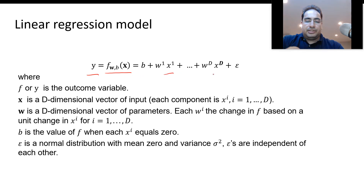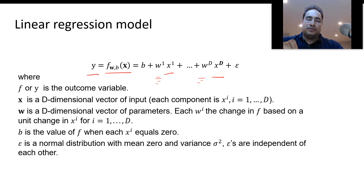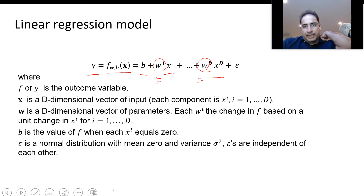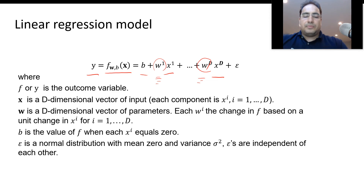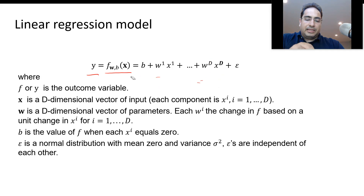The output is calculated by multiplying each input feature by a weight provided in your model. When we train this model, we are trying to find these weights plus the bias. Once we find the weights, the bias can be found by setting all the weights to zero. That's essentially what we want to do — this function models the input and provides the output.